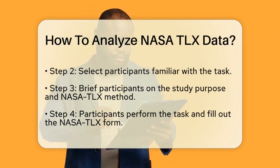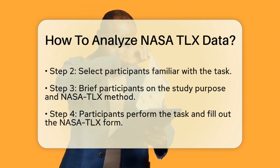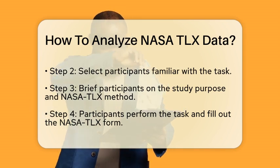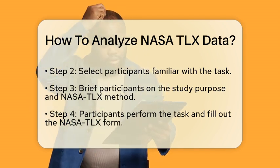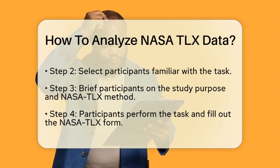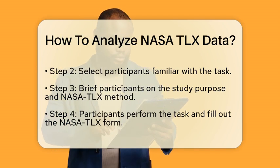Step 4: Perform the task. Have the participants perform the task. During or immediately after the task, ask them to fill out the NASA TLX form. This form will ask them to rate each of the six dimensions on a scale from 1 to 20.